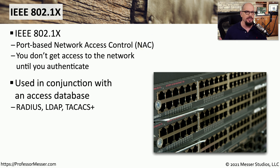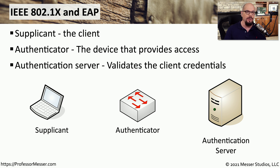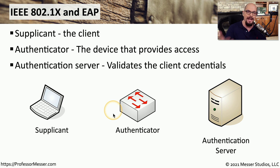802.1x almost always uses some type of centralized authentication database on the back end. When you first connect to the wireless network, you'll be prompted with a username and password, and 802.1x will check those credentials by communicating on the back end to one of these databases. Very commonly, we would use RADIUS, TACACS+, or LDAP to maintain this centralized database of usernames and passwords. There are usually three different parts to 802.1x authentication: the supplicant, which is the client connecting to the network; the authenticator, which is the device that provides access to the network; and a centralized authentication server that performs the validation of credentials.